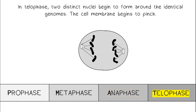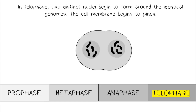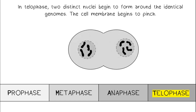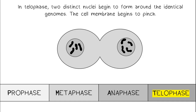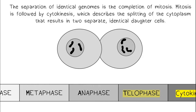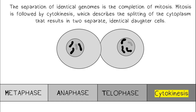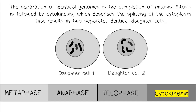In telophase, two distinct nuclei begin to form around the identical genomes. The cell membrane begins to pinch. The separation of identical genomes is the completion of mitosis. Mitosis is followed by cytokinesis, which describes a splitting of the cytoplasm that results in two separate, identical daughter cells.